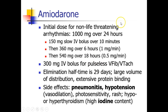The dosing for amiodarone depends on the indication. For a non-life-threatening arrhythmia, the goal is 1,000 milligrams over 24 hours: a 10-minute loading dose of 150 milligrams, then 360 milligrams given over 6 hours at 1 mg per minute, and then the remainder given over 18 hours at about 0.5 mg per minute.